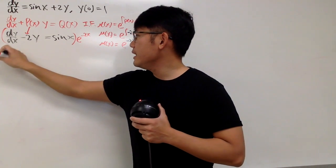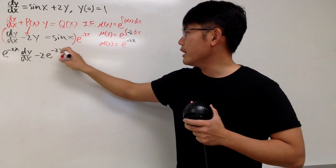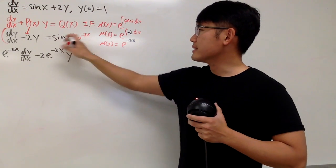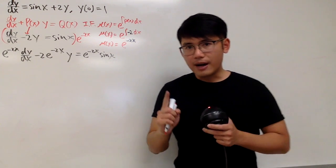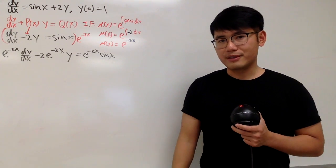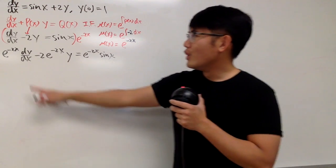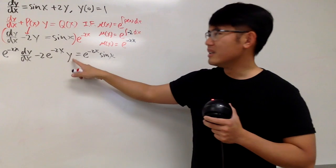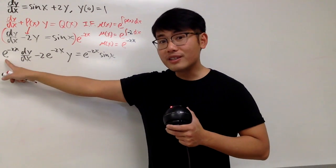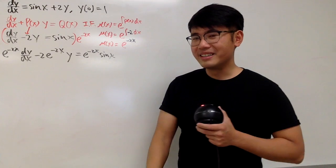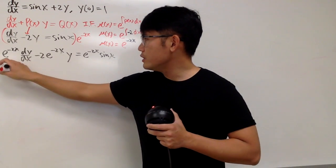This gives us e to the negative 2x times dy/dx, minus 2 times e to the negative 2x times y, and this equals e to the negative 2x times sine of x. Here's the beauty of using the integrating factor — the left-hand side is actually going to be the derivative of the product of two functions. We have this function times dy/dx, and that's the derivative of the second, and this is the original second.